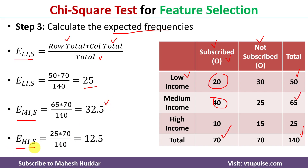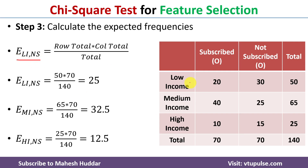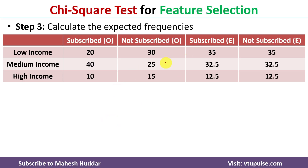Similarly, we calculate the expected frequency of high income given subscribed. For not subscribed: the expected frequency of low income given not subscribed is 25, medium income given not subscribed is 32.5, and high income given not subscribed is 12.5. These expected frequencies are added to the table alongside the observed frequencies.